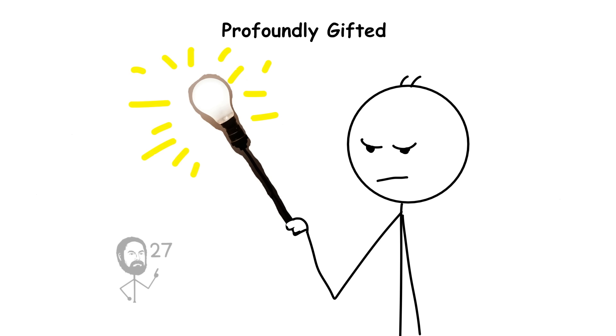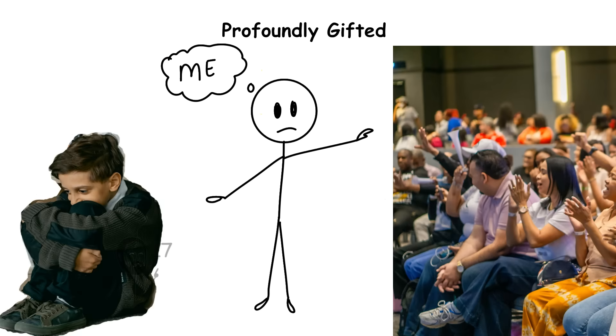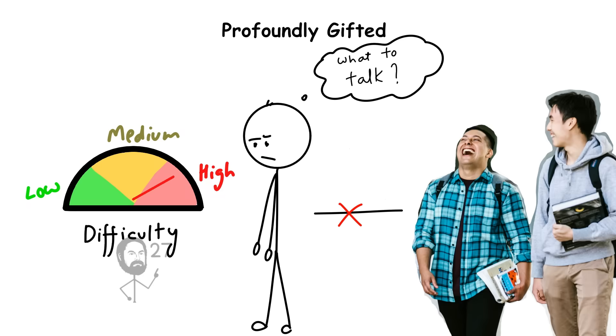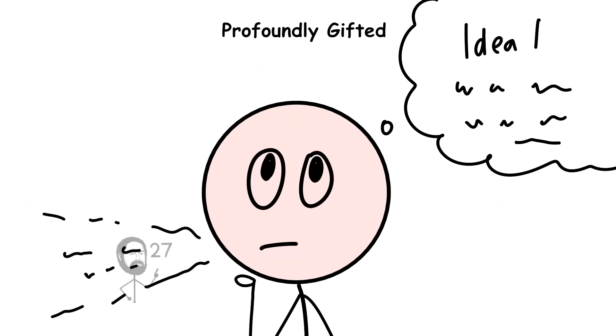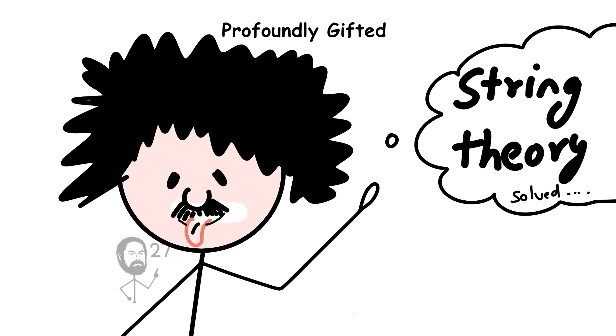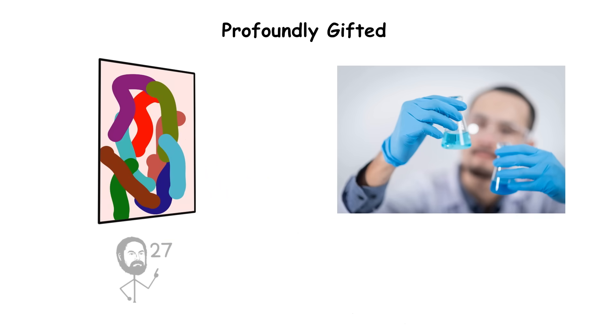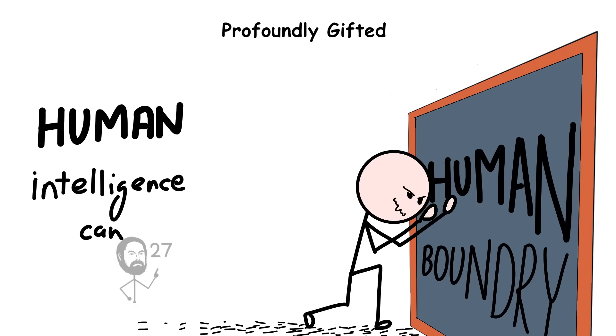Despite such extreme intellectual ability, profoundly gifted individuals often face social or emotional challenges, difficulty relating to peers, hypersensitivity, or perfectionism. The gap between their internal thought complexity and the pace of normal communication can lead to isolation. Yet, when properly supported and challenged, they often become visionaries who redefine art, science, and philosophy, pushing the boundaries of what human intelligence can achieve.